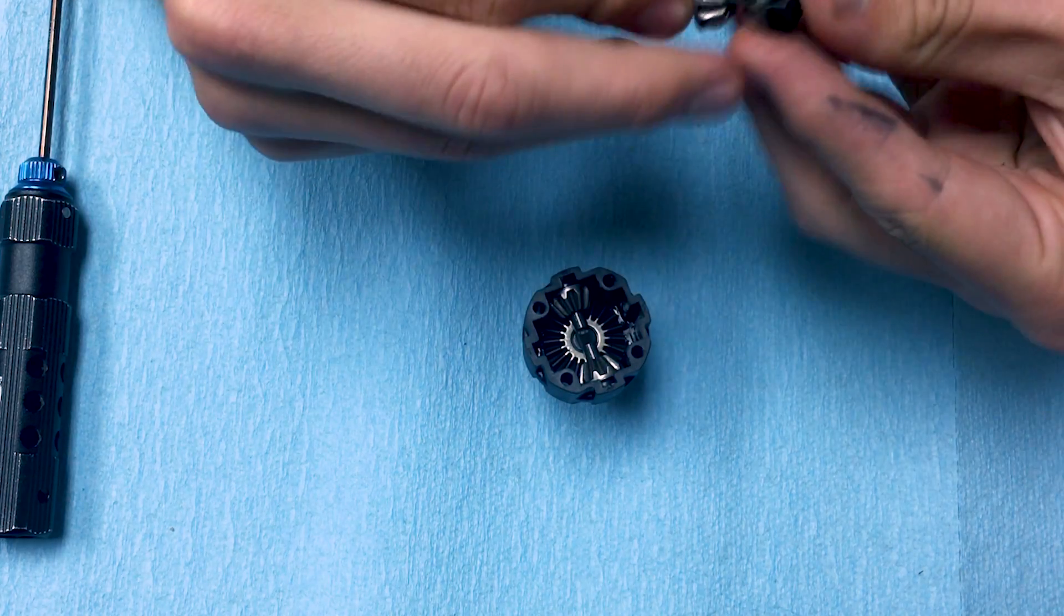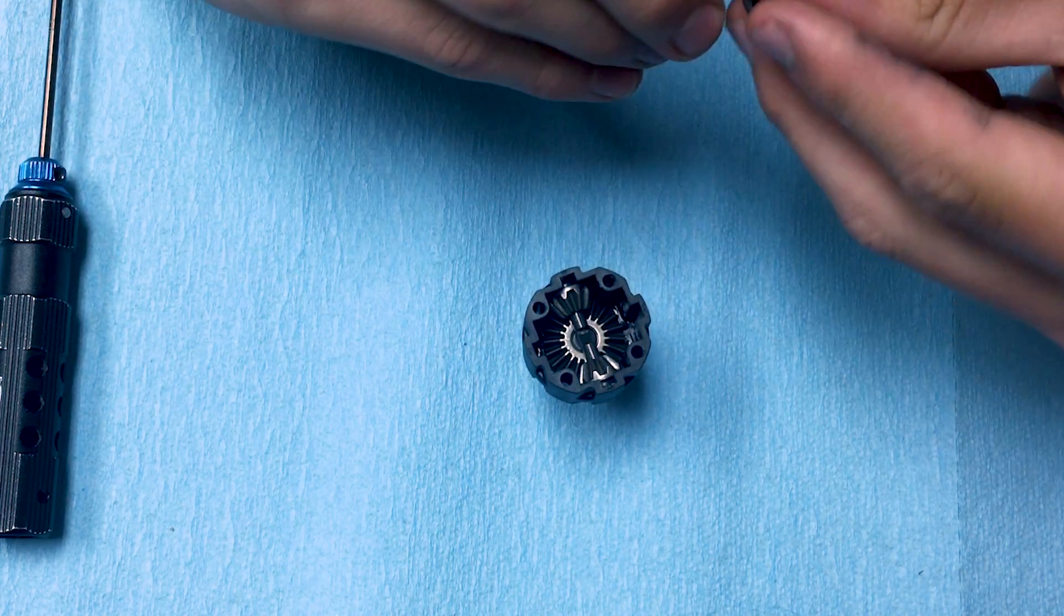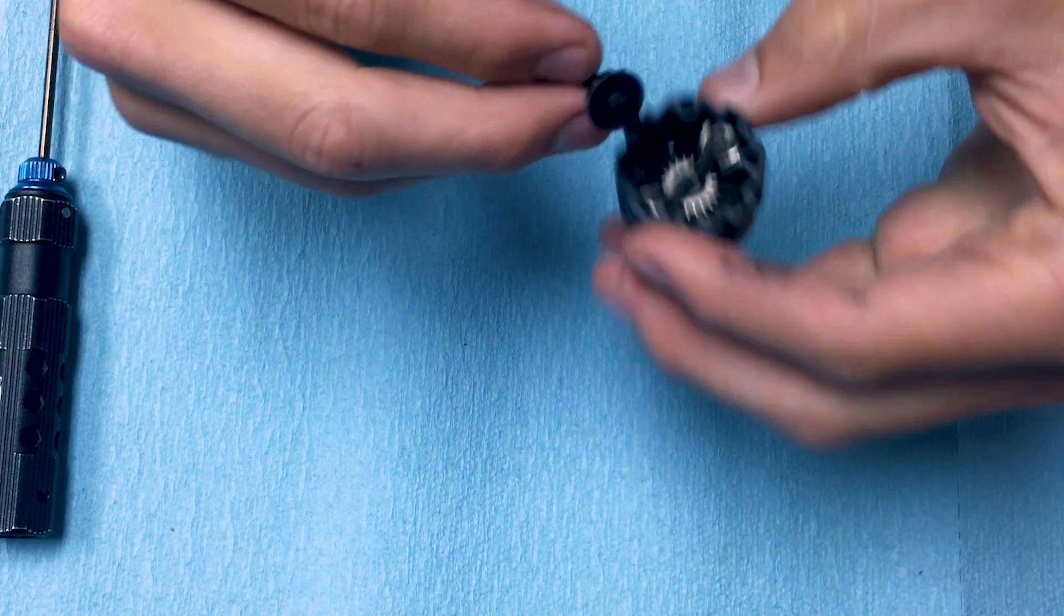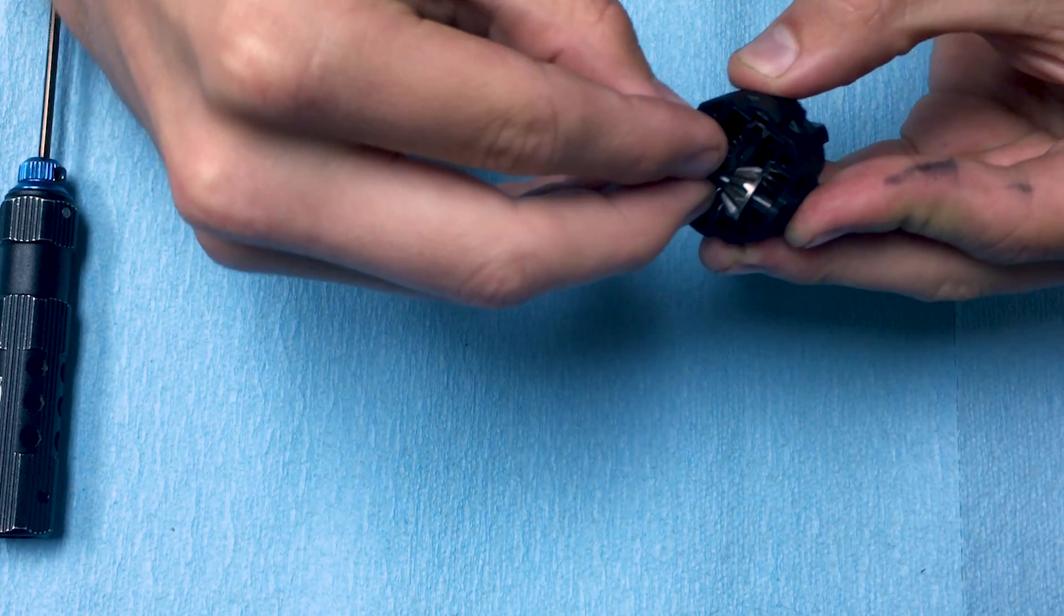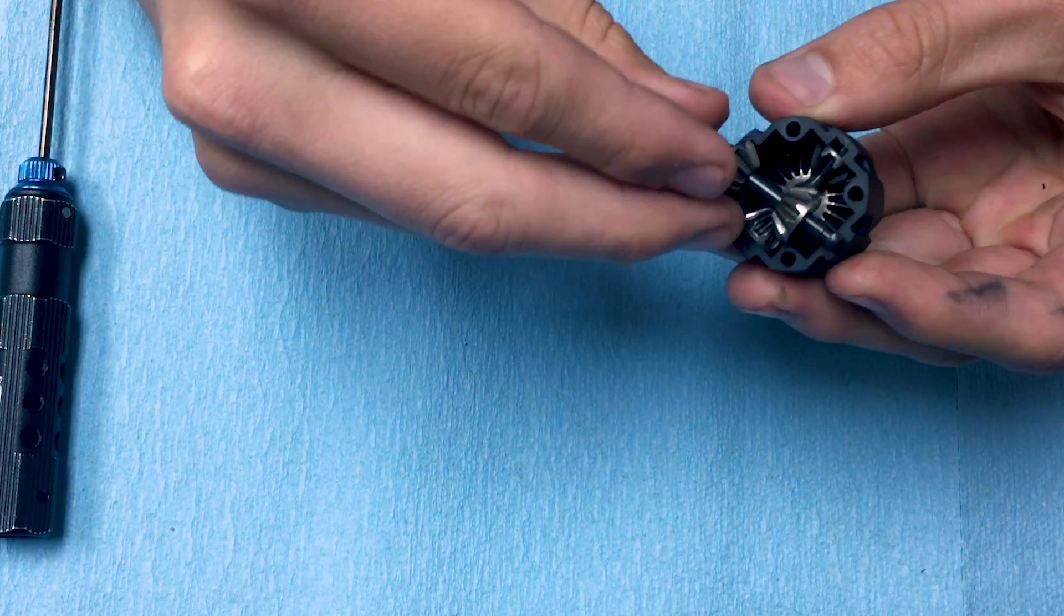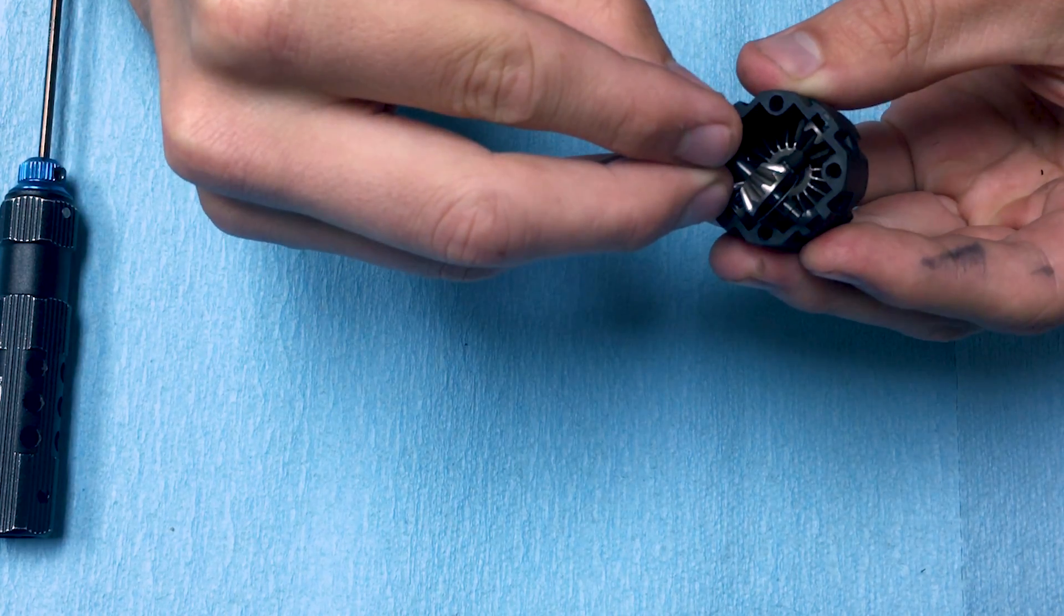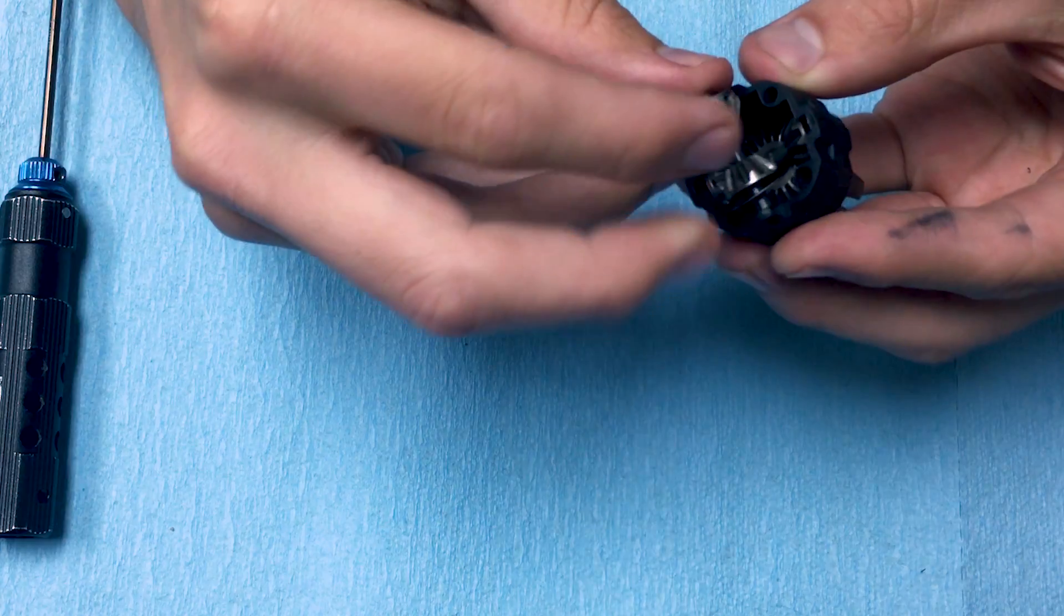So here we'll make sure that the mating corresponding flat spot is facing down and I'll line up this groove just at the bottom just so it's in. If it pops out like it just did, slide it back in.